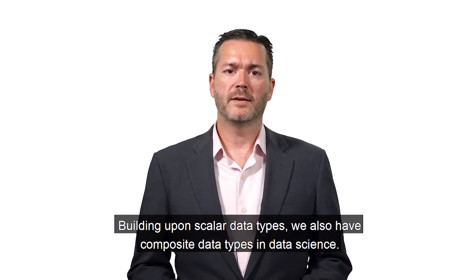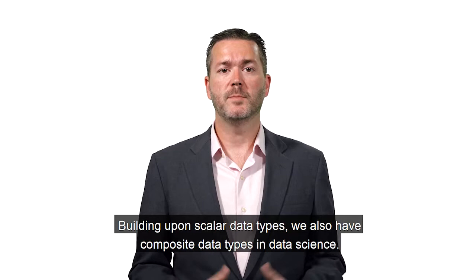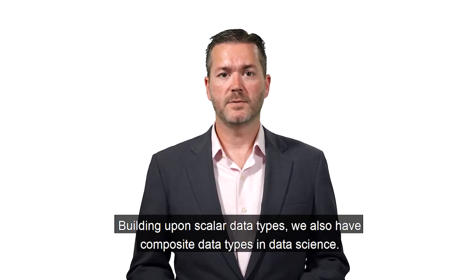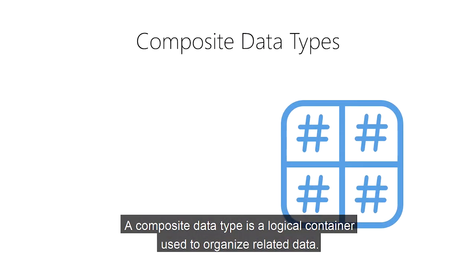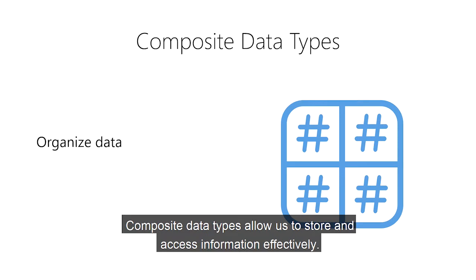Building upon scalar data types, we also have composite data types in Data Science. A composite data type is a logical container used to organize related data. It contains a set of scalar data types organized in a specific way. Composite data types allow us to store and access information effectively.